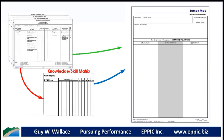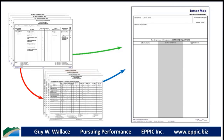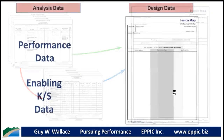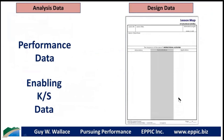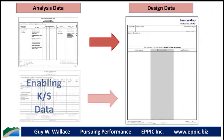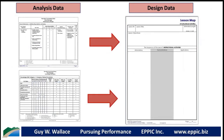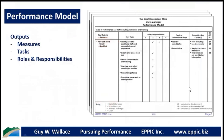There are multiple performance model charts that are often used to pull content from, then put into the instructional design of a lesson map. There are usually several different matrices of data that also feed the lesson map — that depends on the scope. If it's short and simple, you wouldn't have all this; if it's something larger like labor relations for new supervisors, there may be a bit more to it. The performance table data and the enabling knowledge and skill data feed the lesson map.